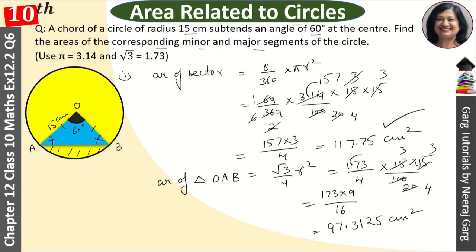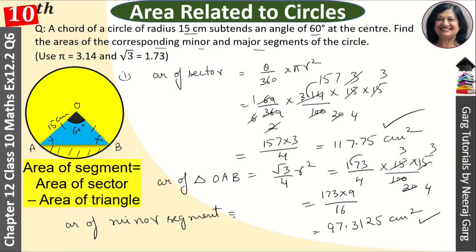You have the answer of sector area and the answer of triangle. What do you want to remove? Area of minor segment. For minor segment, we will minus the triangle from area of sector, so 117.75 minus 97.3125, and the answer will be 20.4375 cm squared. This is our first part, the answer of minor segment.